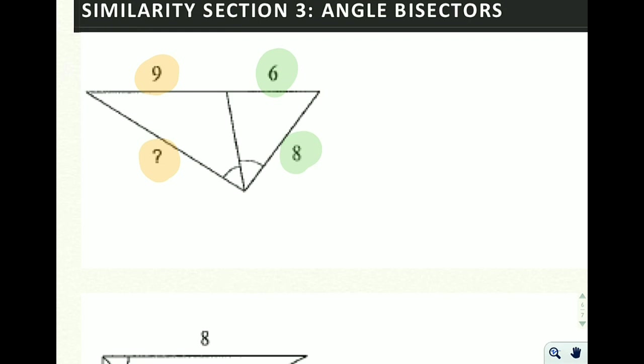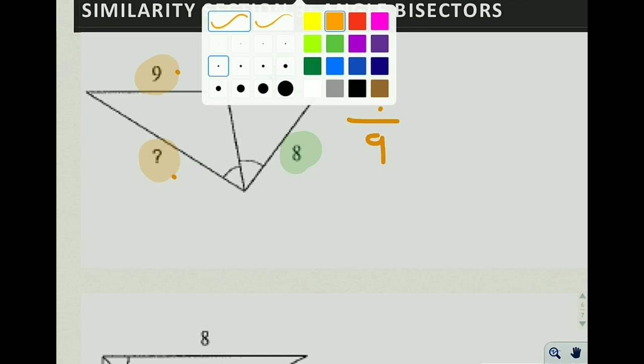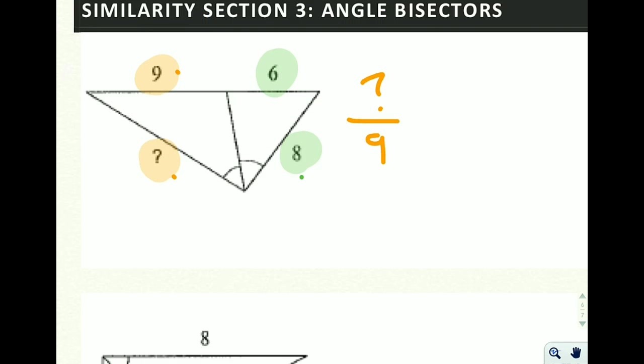So in this problem what we're saying is that question mark over 9, so this over this, is proportional to or equal to the fraction of 8 over 6. And that's always going to be true when we have an angle bisector.